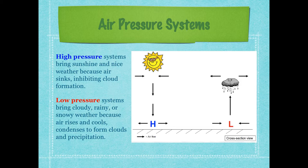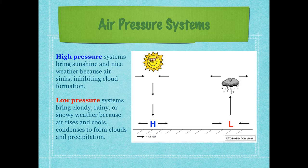High pressure systems bring sunshine and nice, clear weather. During summer that means it's pretty hot because nothing is blocking the sun. In winter it can be cold but still clear. What you really need to understand about high pressure is there's very little chance of precipitation — essentially no precipitation — because clouds cannot form. The atmospheric pressure is high, so it doesn't allow cloud buildup.